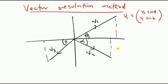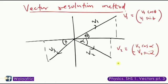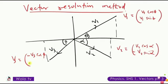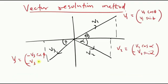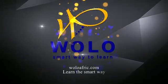So v2 here will give us v2 cos alpha minus v2 sin alpha, and then v3 will give us minus v3 cos theta minus v3 sin theta.